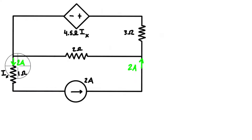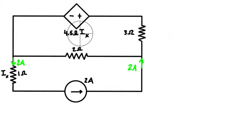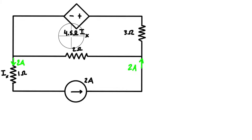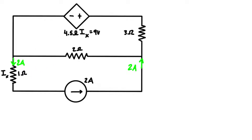With ix equal to two amps, the dependent source voltage is 4.5 ohms times two amps. By Ohm's law, ohms times amps gives volts, so 4.5 times two gives us nine volts.